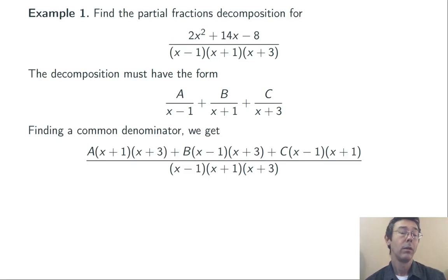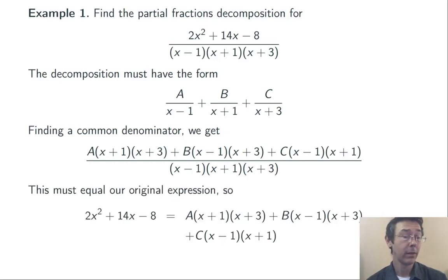Okay, so now I do the same thing as before. I get a common denominator. The first term, A/(x - 1), needs to be multiplied by (x + 1)(x + 3)/(x + 1)(x + 3), and so on. Now, since I have a common denominator there on the expression I have and the one I started with, I can just equate the numerators.